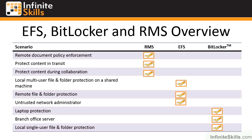To draw a difference between EFS and RMS, think about protecting your child. EFS is like having your child at home with an ardent guard at the door and all the windows bolted. While your child is at home, it's totally safe — no one can get in. But if your child leaves the house, there's no protection. EFS only protects data when it's in that location. RMS is like handcuffing a police officer to your child — no matter where that child goes, that protection follows. With RMS, once data has been protected, it's always protected.